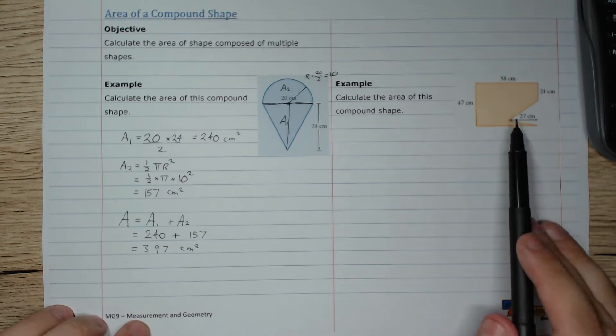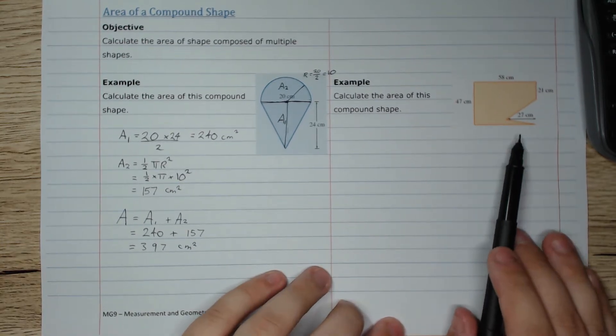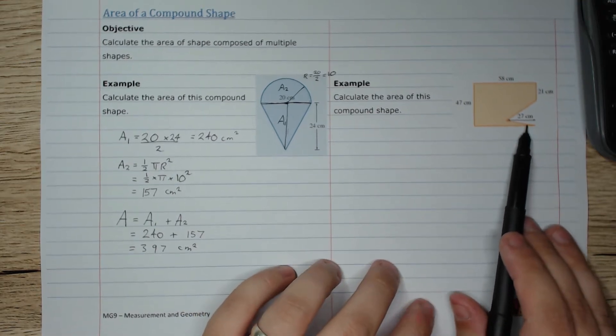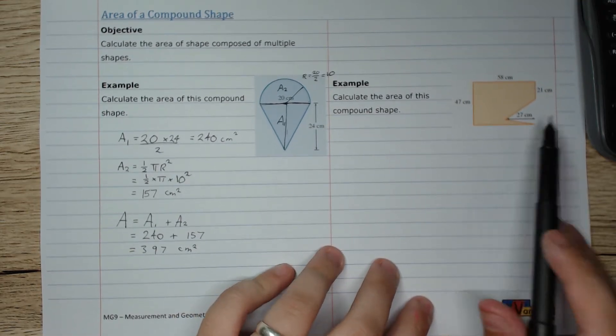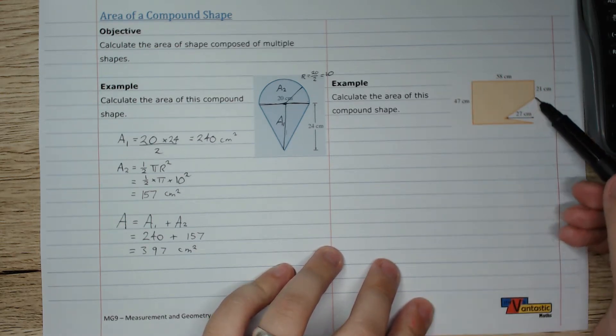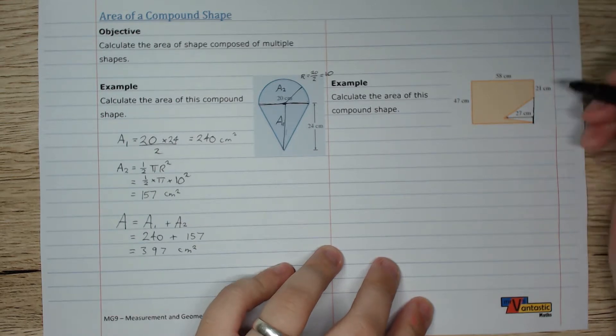Great. This shape over here is a compound shape as well, but you'll notice this is not exactly two shapes stuck together. Rather, it is one shape that has a hole taken out of it, which is another shape over here. So we actually have two shapes here: we've got a rectangle, and then we've got this triangle that's been cut out.